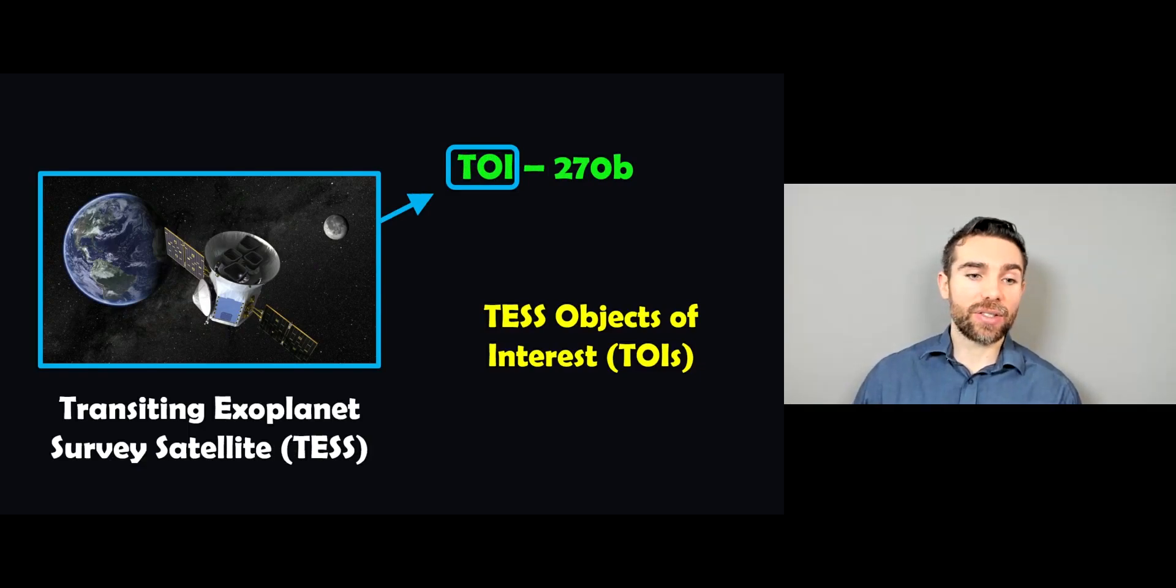Now we have TESS. So TESS is the Transiting Exoplanet Survey Satellite. And the TOI relates to an object of interest or a TESS object of interest. So these are stars that have given a signal that could hint that there's a planet there and then require follow-up work.